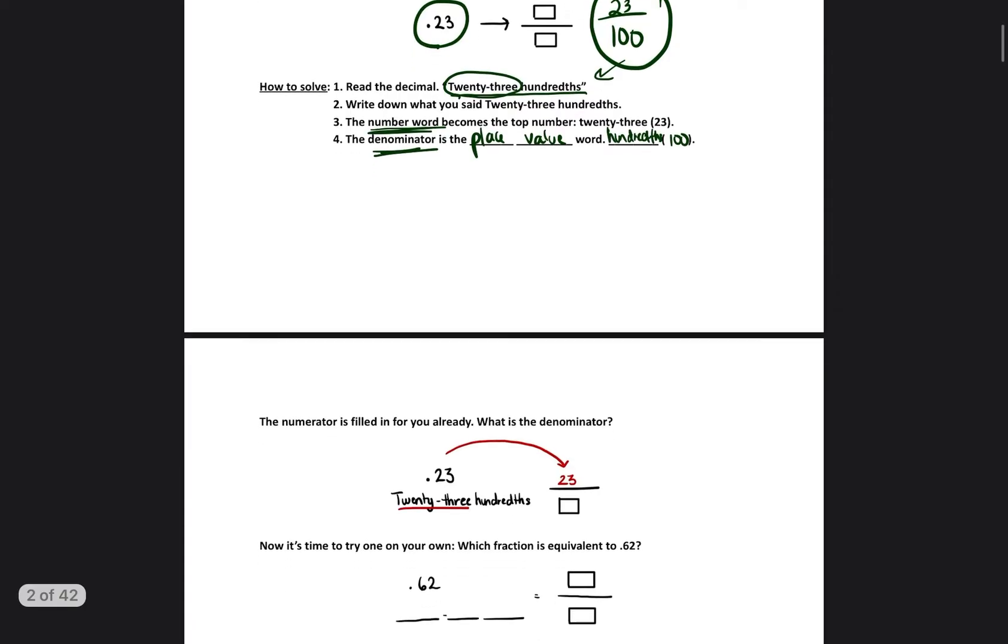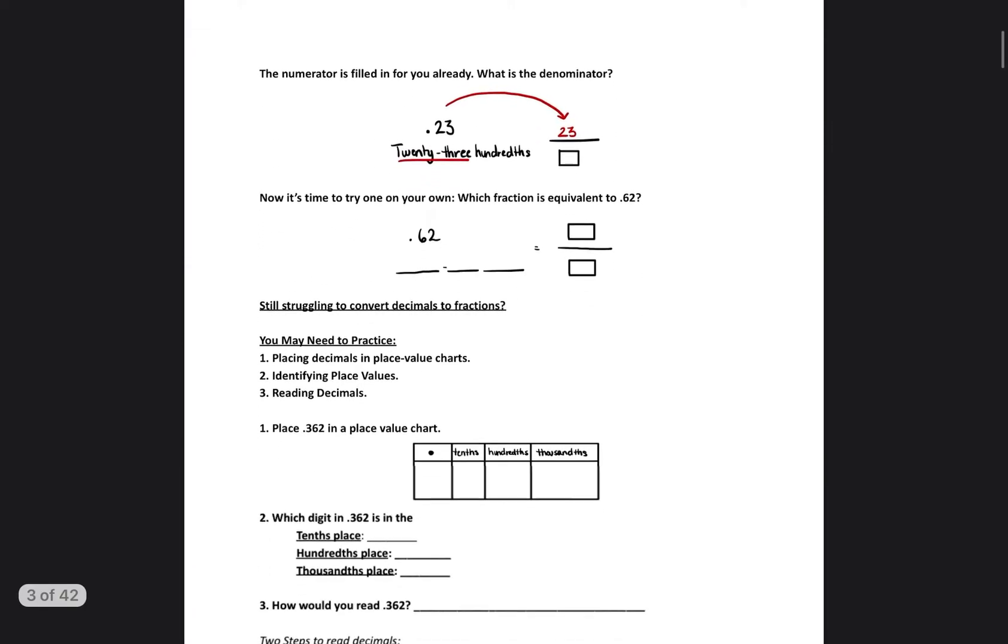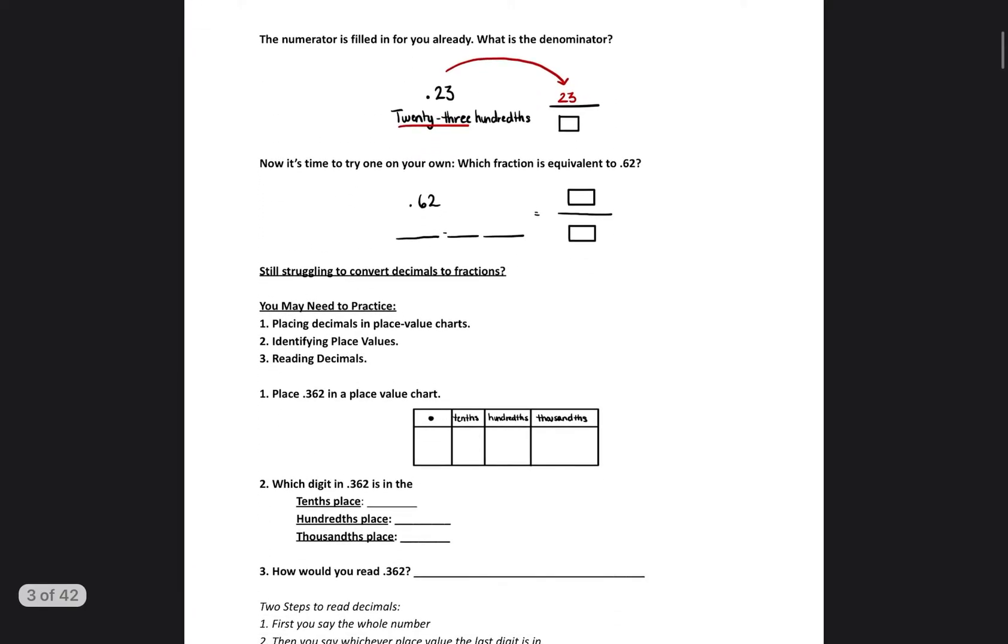So it's very simple. If you can read it, then you can write it. So we're going to try this again now with 0.62. So how do we read 0.62? The right way to read that would be 62 hundredths.